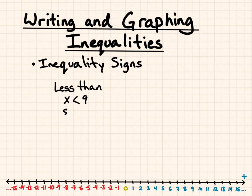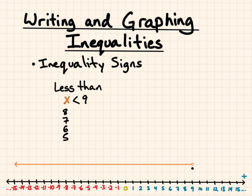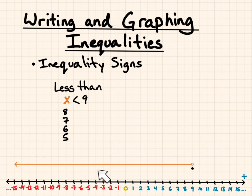And if x was less than 9, that would be all the values less than 9. So I'd be not including 9. If you look here, I have a circle, but I include all the values, so I draw an arrow towards the values that make this statement true.